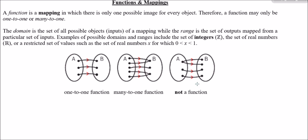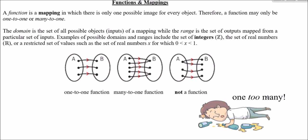Why isn't a one-to-many mapping a function? If you think of the input as a question and the output as the answer, having more than one possible answer is completely ambiguous. So we must have exactly one output per input. As a memory aid: think of it as 'one too many' — just as a bouncer would turn someone away if they'd had one too many. One-to-many graphs are excluded from the family of functions.